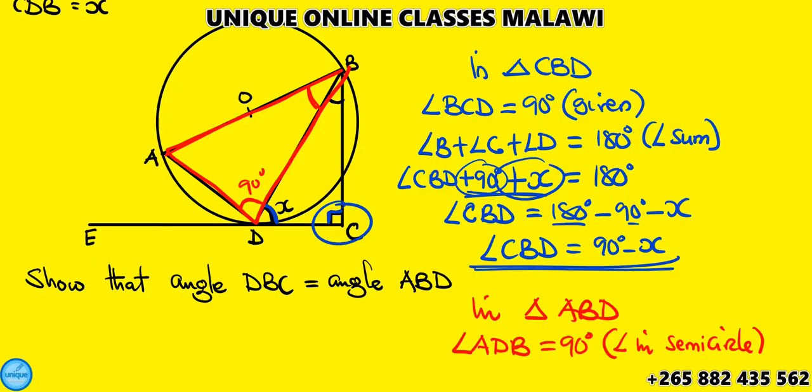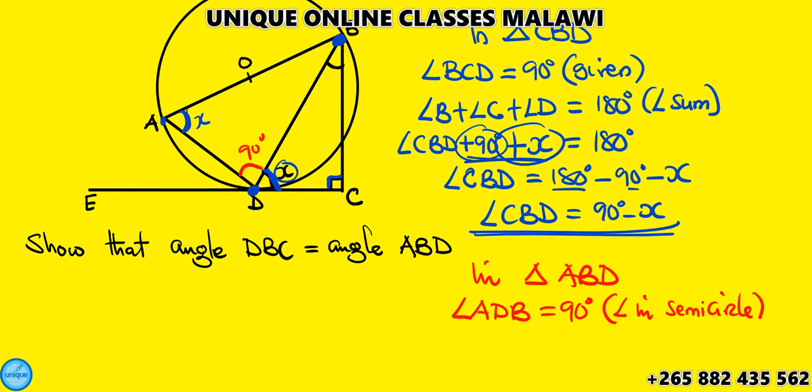CDE is a tangent, so the tangent and chord make an angle. The tangent and chord make an angle, and the value of that angle is x.